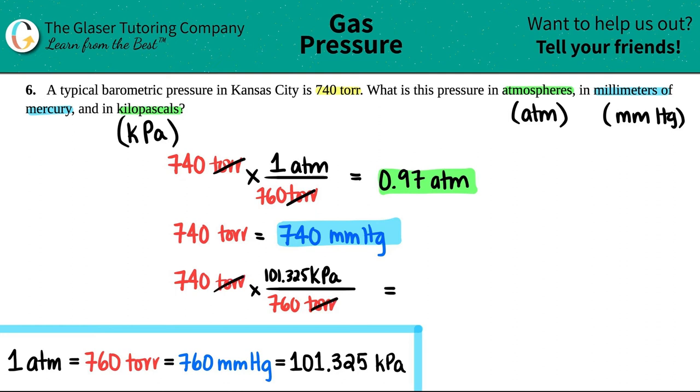And now your answer will be in kilopascal. So 740 times 101.325 divided by 760. And you get, if we do three sig figs, actually two sig figs, we get 99. So 99 kPa or kilopascals.